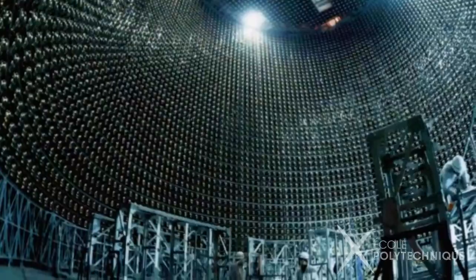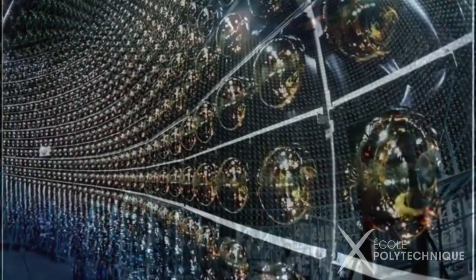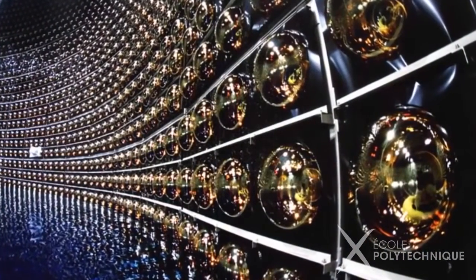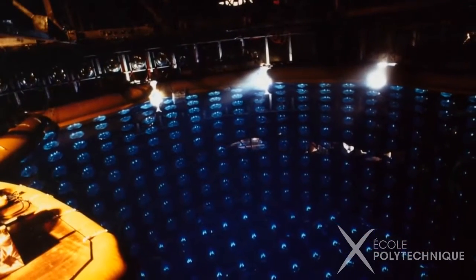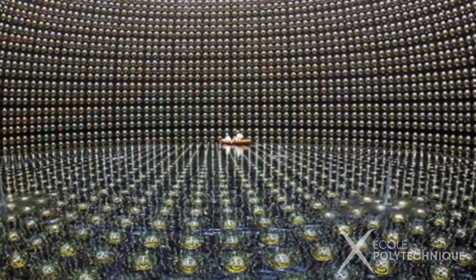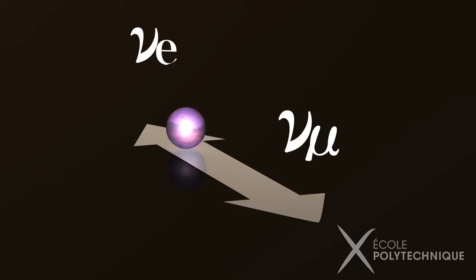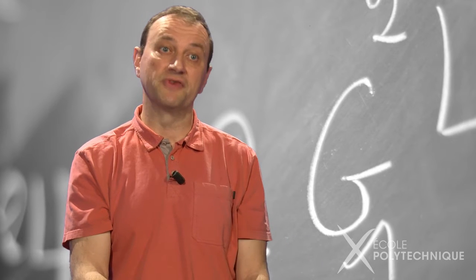Neutrinos or anti-neutrinos of the muon type are produced by a particle accelerator and detected 300 km downstream, where some of them interact with the 50,000 tons of ultra-pure water contained in a huge underground detector. This experiment allowed the first direct observation of the transformation of muon neutrinos into electron neutrinos, providing evidence of the existence of such a phenomenon.